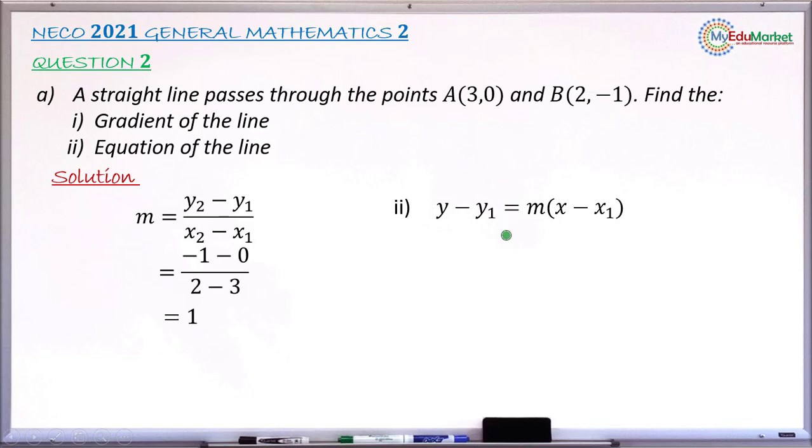I'm going to have y minus 0 equals 1 times x minus 3. Simplifying this, y minus 0 simply gives y, and 1 times what is in the brackets simply gives what is in the brackets. We have y equals x minus 3, and this is now the equation of the line. So Roman 2 has now been answered.